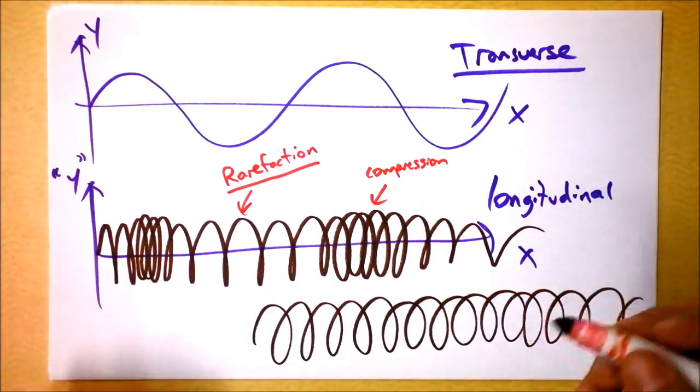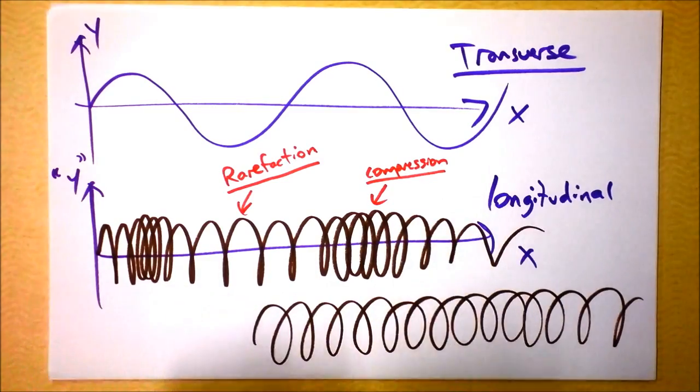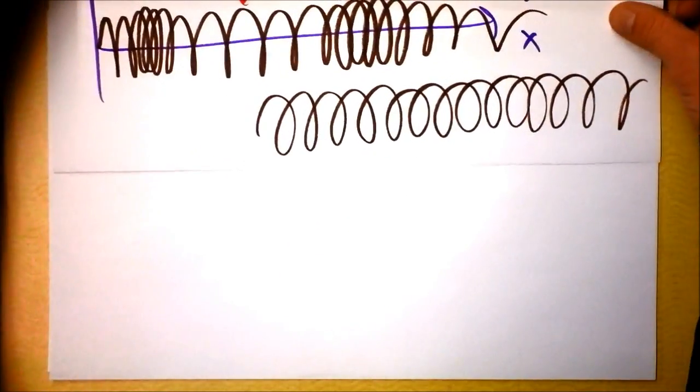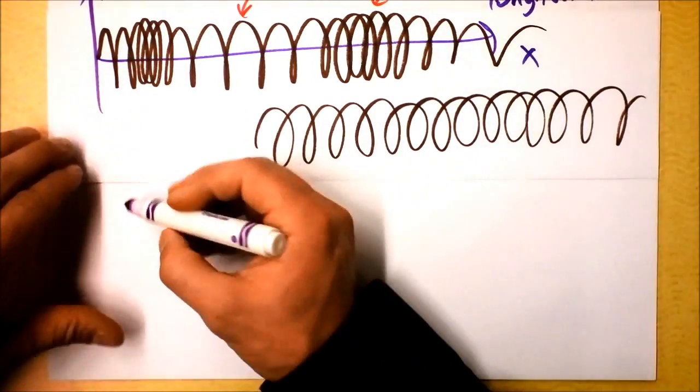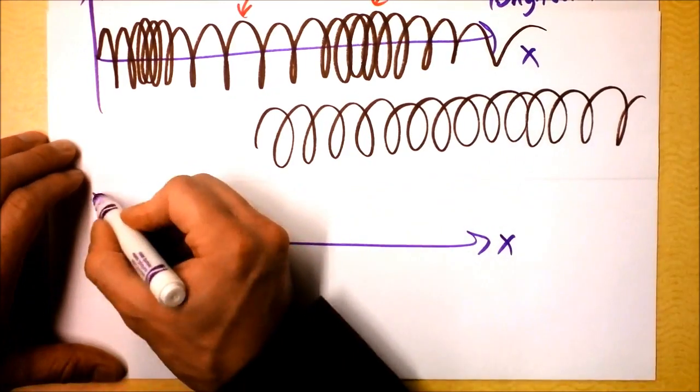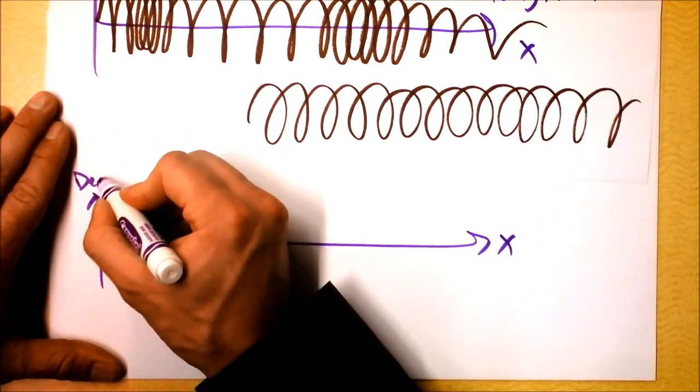So instead, I could actually draw this wave as a graph of density. Longitudinal waves are kind of cute like that. So we could say, instead of position versus position, I could say density. Check this out, density versus position.